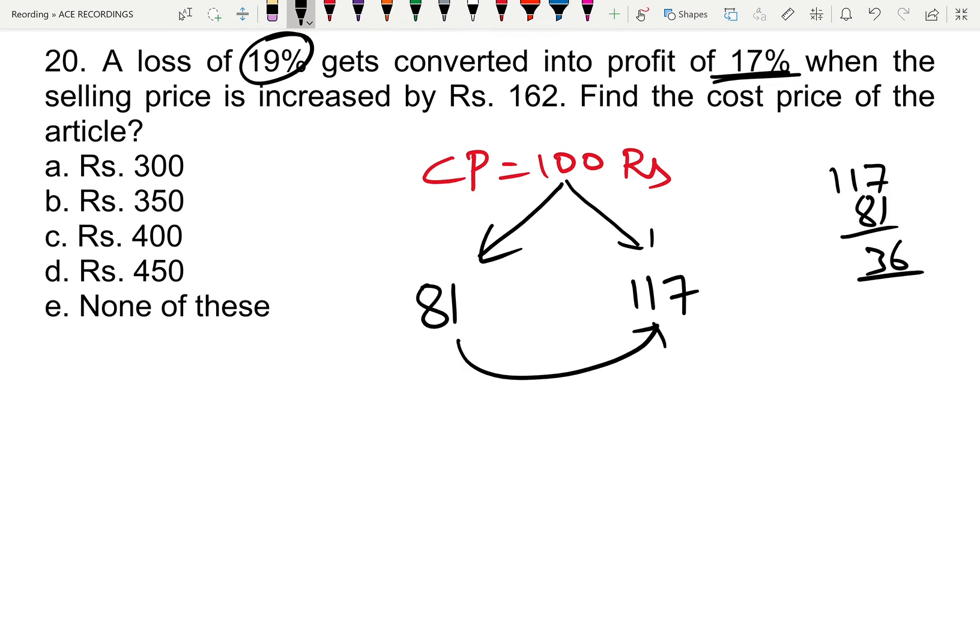So if cost price is 100 rupees, the selling price increase is 36 rupees. But the actual selling price increase is 162 rupees according to the problem.